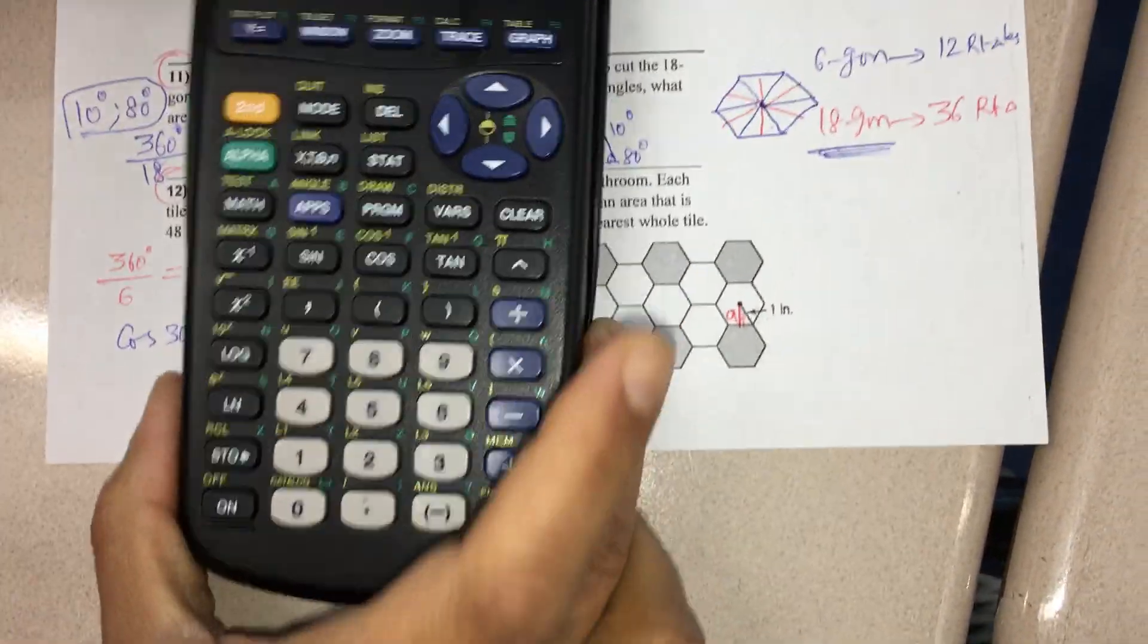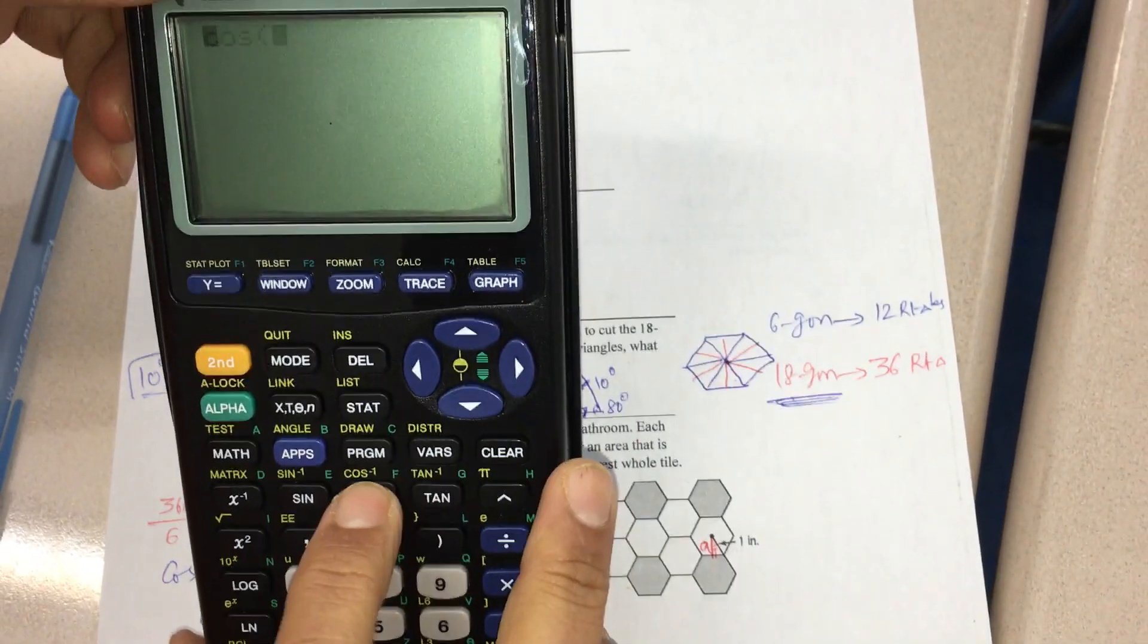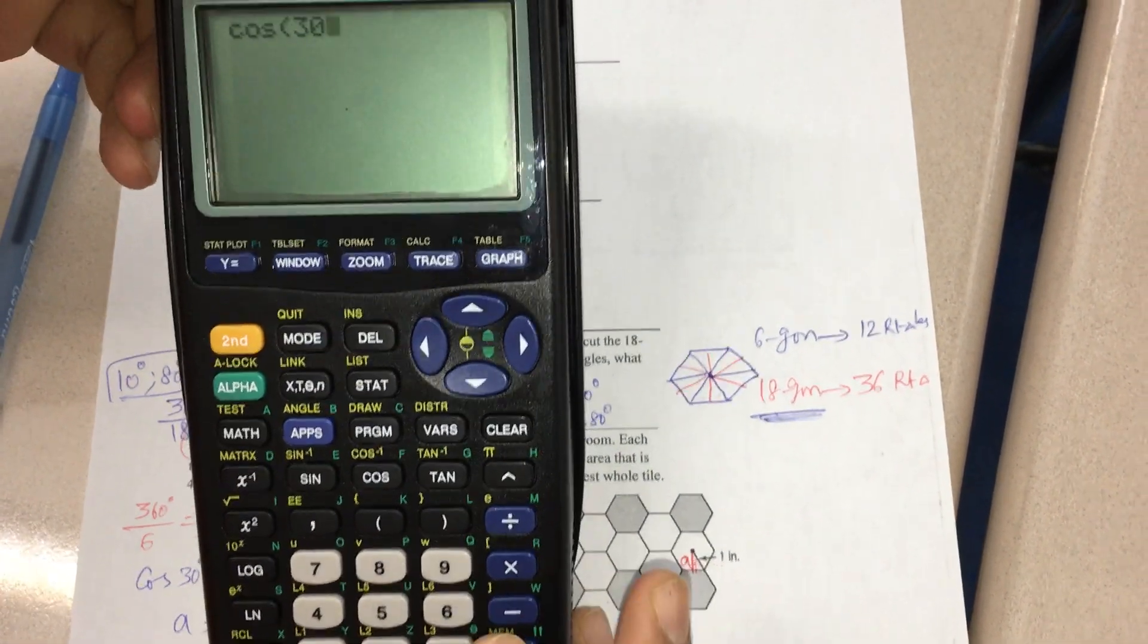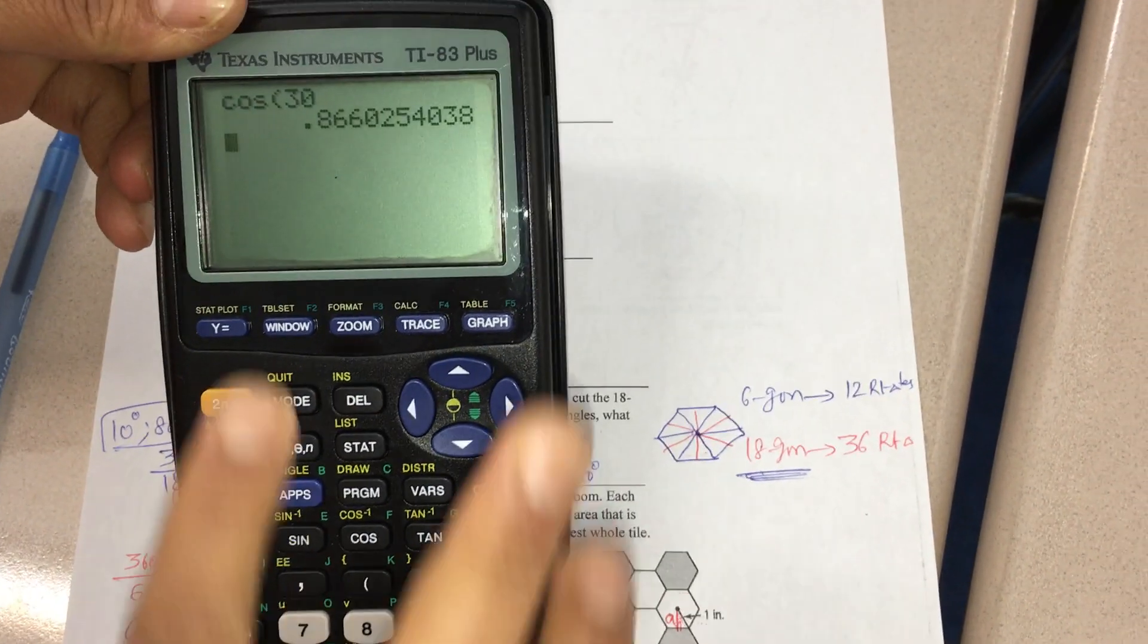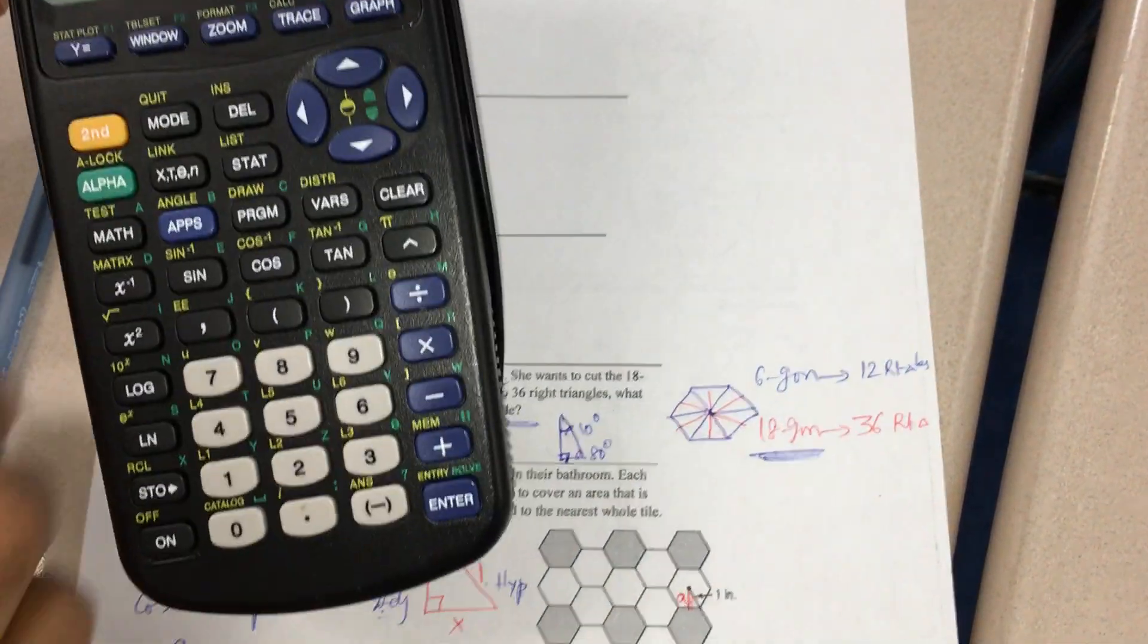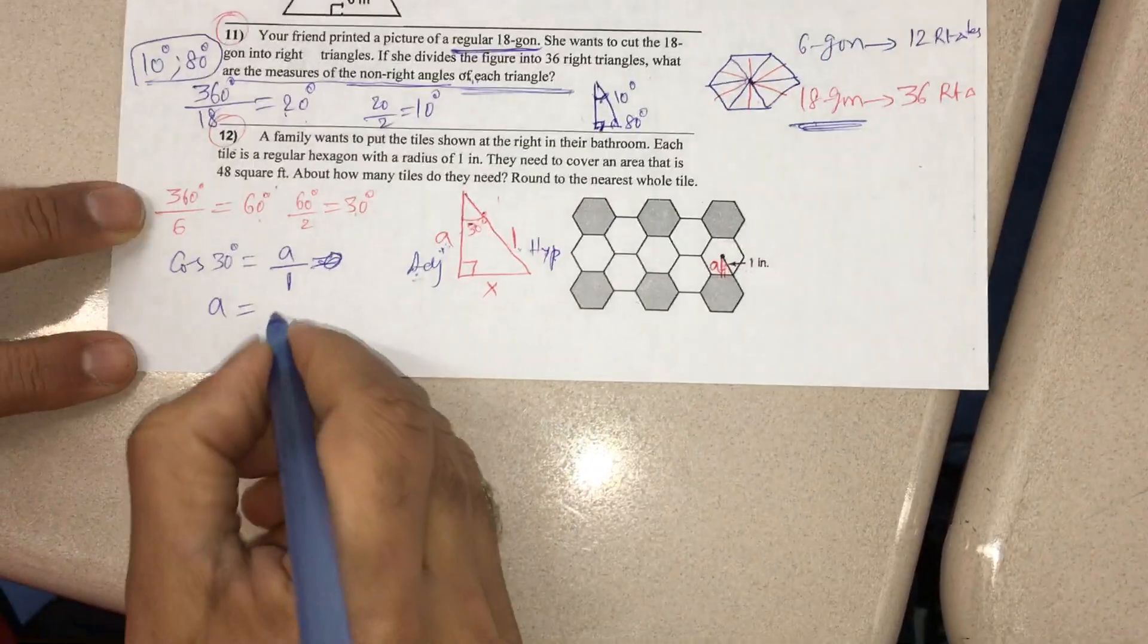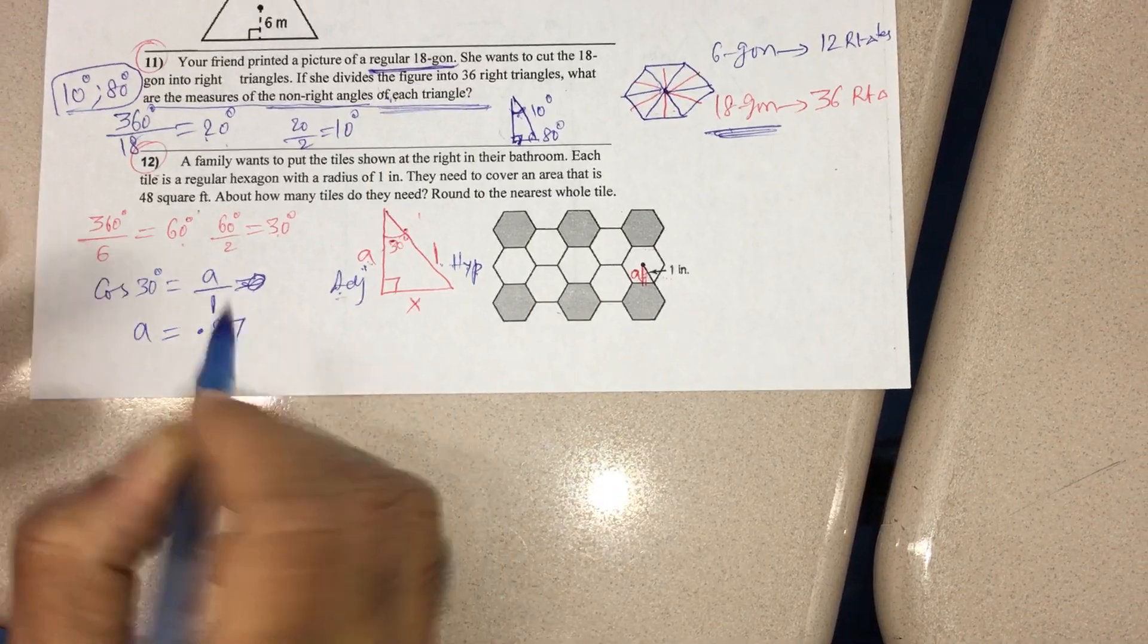I get A as the cos 30 value. If you use a calculator, cos 30 degrees equals 0.866. So I can take 0.87 as the apothem.